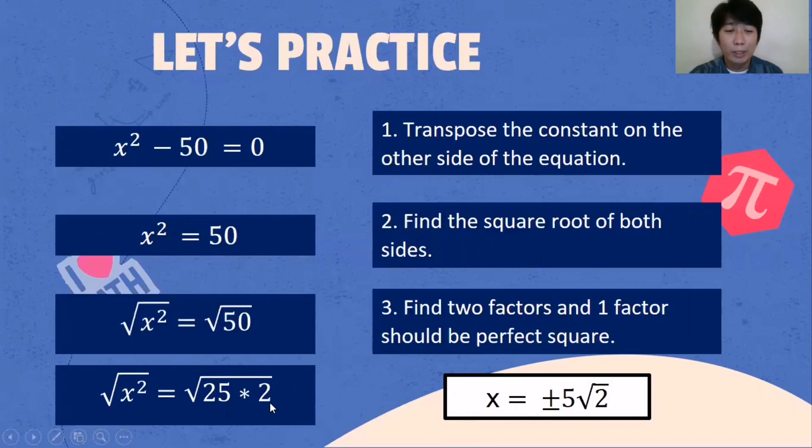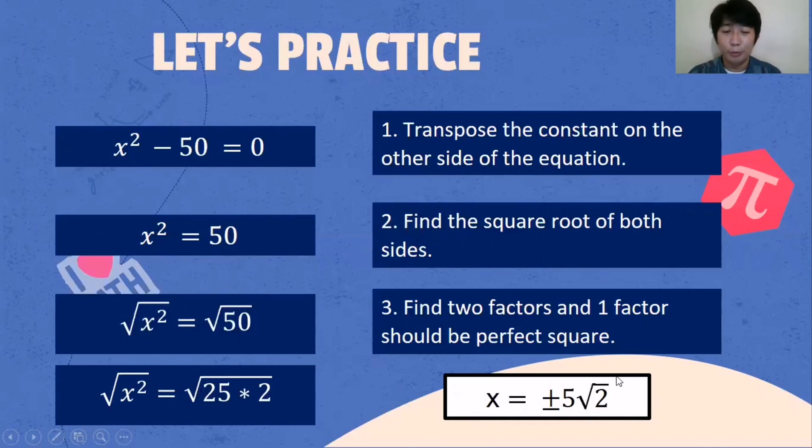Because the square root of 25 is 5, and we will be keeping the square root of 2 as it is.